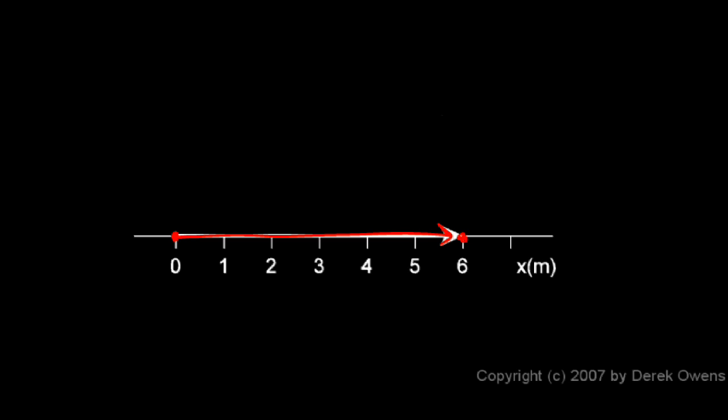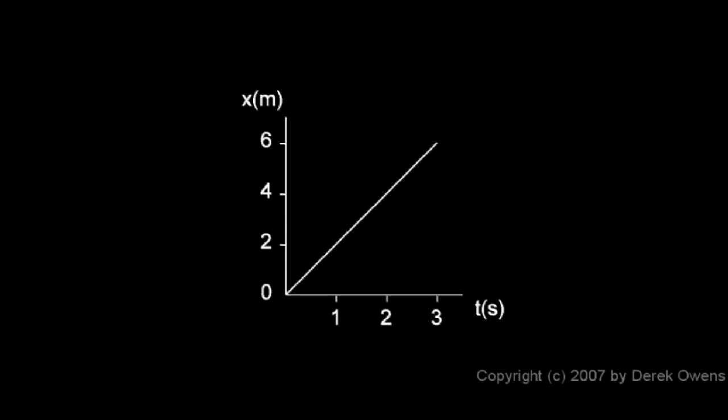Now what we'll do is make a graph of position versus time. And position we call x, and we'll put that on our vertical axis, and time t will be on the horizontal axis. And here's the graph.